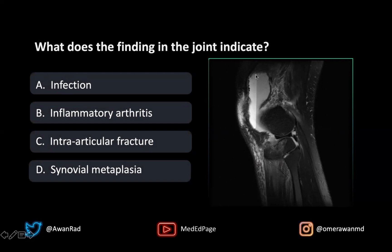The interesting thing is there's a nice straight line here in the fluid, and the fluid has different signal intensities — one aspect of the fluid is brighter than the other. This indicates that the fluid has different components and materials because there are different densities allowing layering to occur. A clue here is there's actually an intraarticular depressed fracture along the tibial plateau.